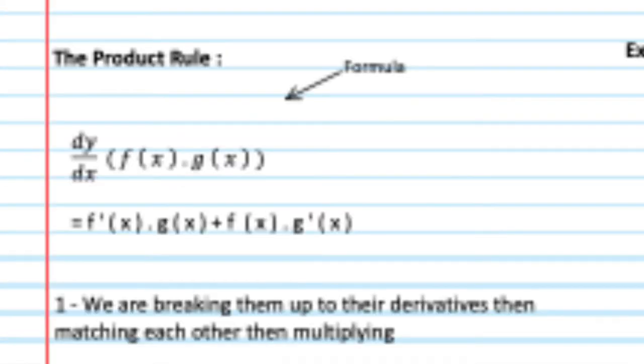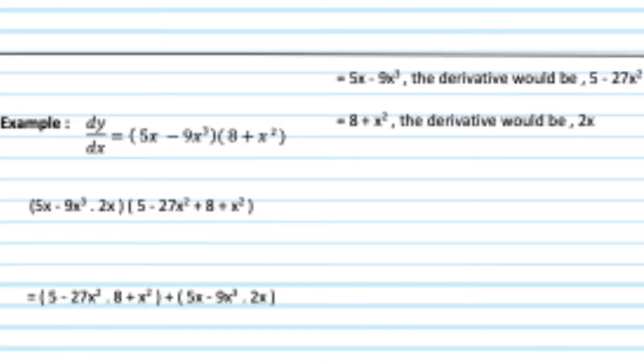The product rule states that for us to use it, we have to multiply the f prime with the secondary function g(x), and then add it with the first function times the prime of the second function. So in the example, 5x minus 9 cubed times 8 plus x squared. So to solve it, it would be 5 times 3 times parentheses 5x minus 9 squared times 8 plus x squared.